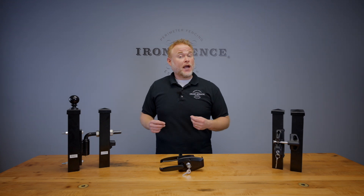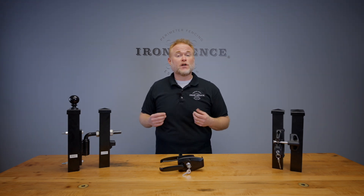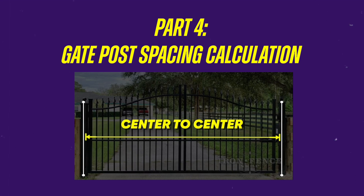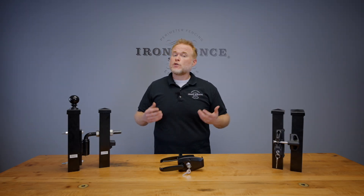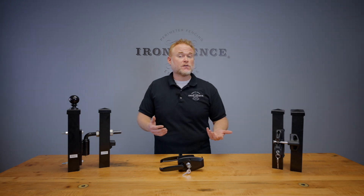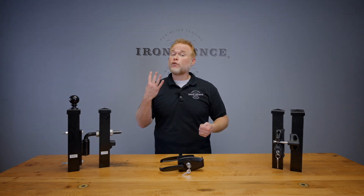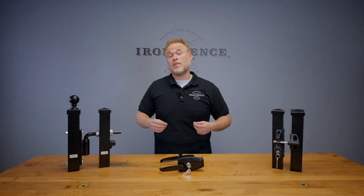Now that we know how to calculate our fence post spacing, let's look at how to do the same with our gates in part four: gate post spacing calculations. We're still going to use our on-center post spacing for the gates, but the calculation is going to change to account for all of our gate components. Whereas we only need to know the panel width and post size for fence panels, we need four bits of information to calculate our gate posts on-center measurement.